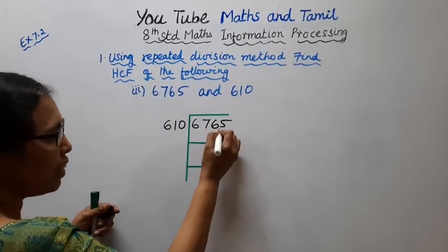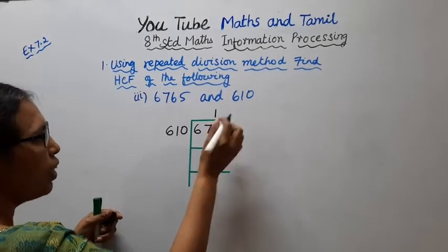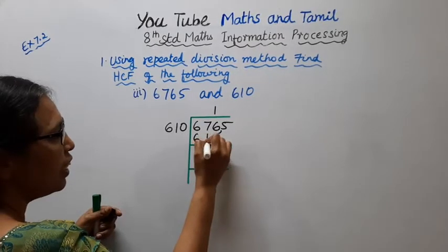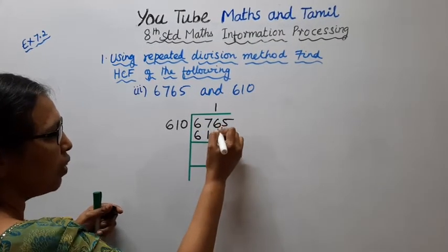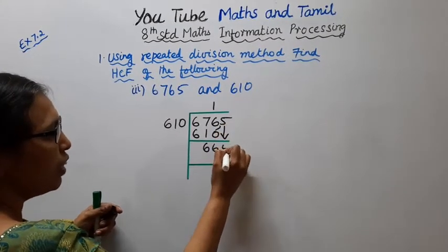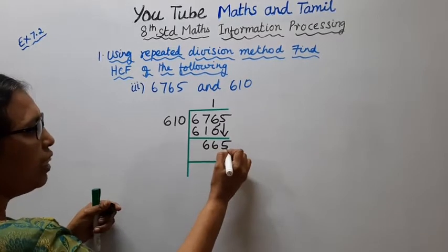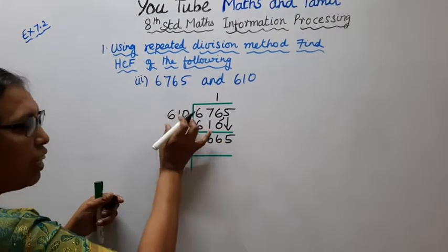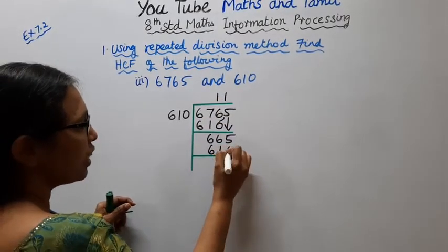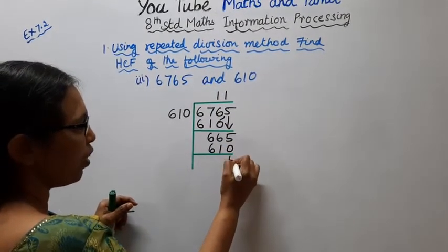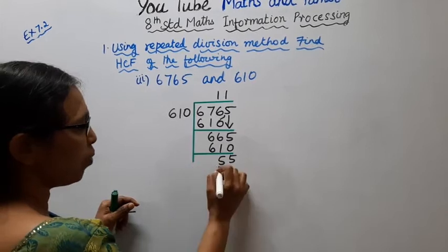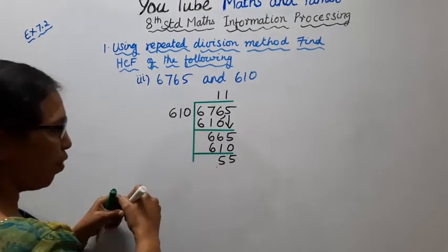We divide 6765 by 610. 610 goes 1 time into 665. 1 into 610 is 610. Subtract: 665 minus 610. Bring down 5. Now 610 goes 1 time. 1 into 610 is 610. Subtract, remainder is 5, bring down 6. So our remainder is 55.